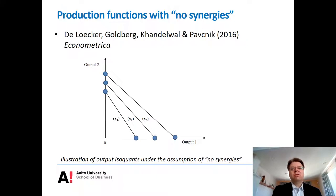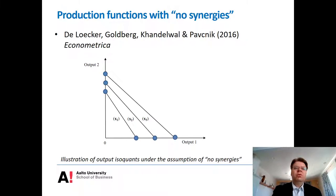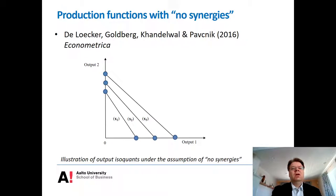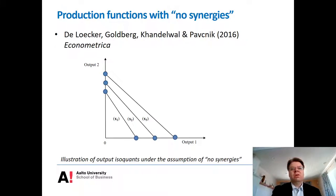Their idea is to use data from single-output firms, indicated by the blue dots in the diagram. They estimate a production function for output number one using specialized firms, and do the same for output number two. So they estimate two separate production functions based on firms specializing in each output. Subsequently, for multiproduct firms, they interpolate between these single-output production functions, indicated by the straight lines connecting the blue dots. The idea is that with the same input resources, you could obtain an extreme point on output one or output two, and then simply interpolate.